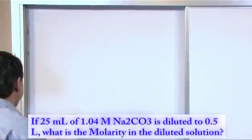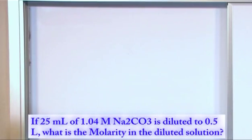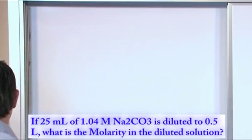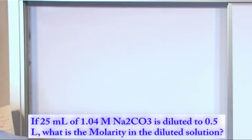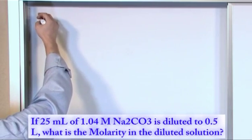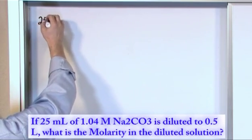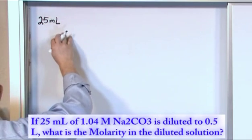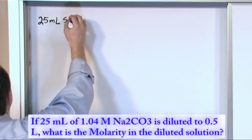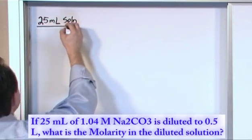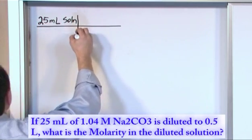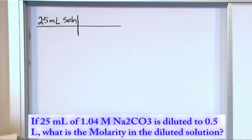So let's start by finding out the number of moles of solute. In this case, it's Na2CO3. How many moles of that stuff exists in the first solution? So to find that, we start with 25 milliliters of solution. And what I mean by solution, this is the initial solution. This is the first part of the problem. We're just trying to find out how many moles of solute exists in there.